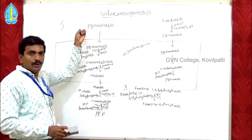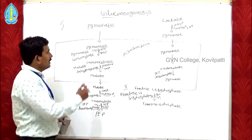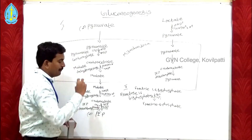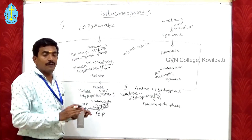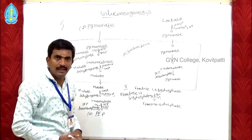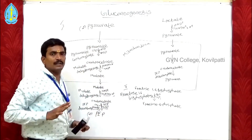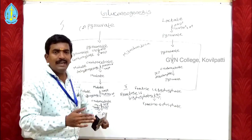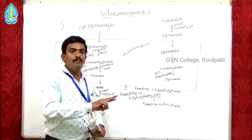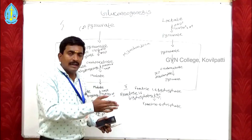Finally, one molecule of oxaloacetate is converted into one molecule of phosphoenolpyruvate (PEP). This is the first bypass reaction. If pyruvate is the precursor, it follows this route. If alanine is the precursor, alanine is directly converted into pyruvate by transamination — the amino group is removed from alanine — and the pyruvate then enters the pathway. If lactate is the precursor, the process differs.